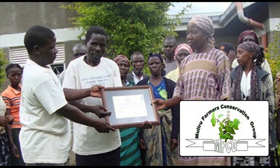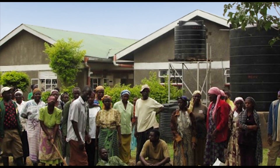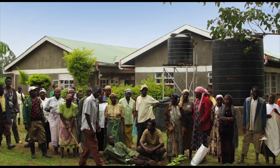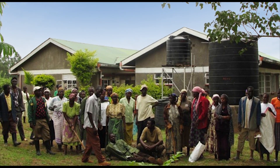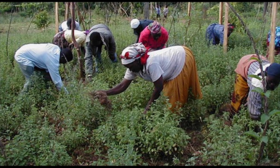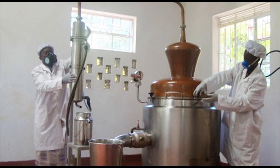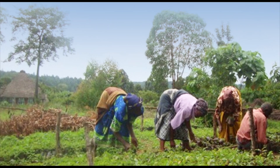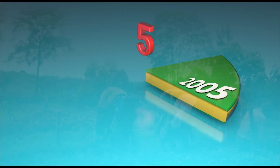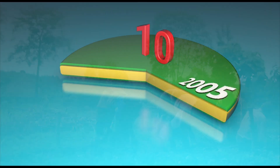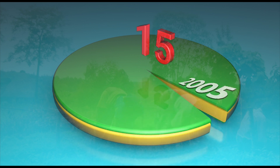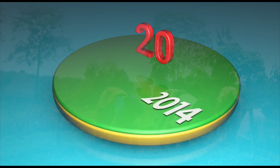The award-winning Muliru Farmers Conservation Group is supporting about 400 rural households to cultivate an indigenous medicinal plant that was over-exploited, and providing processing and marketing facilities to improve revenues and reduce pressure on the Kakamega forest. The acreage under Oxumum Kilimanscaricum has increased from 2.5 hectares in 2005 to 20 hectares in 2014.